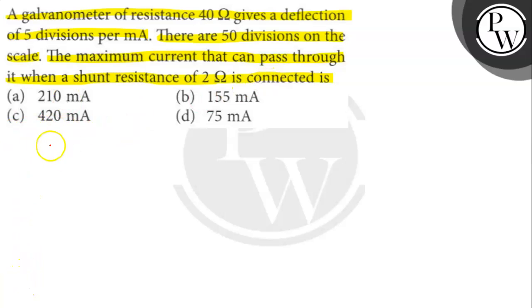Here, Ig equals 50 by 5, which is 10 mA. Rg equals 40 Ohm.